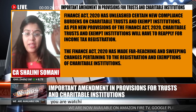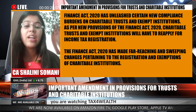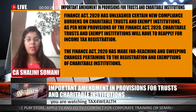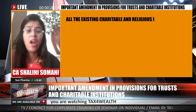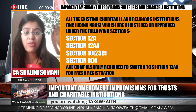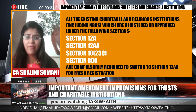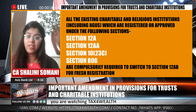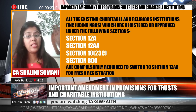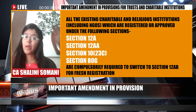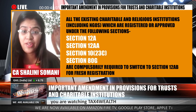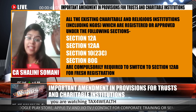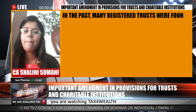Section 12AB لایا گیا ہے جو section 12A of Income Tax Act 1961 کو replace کرتا ہے۔ اس کے حساب سے اب جو بھی trust پہلے 10(23C)، section 11، section 80G، یا section 12A میں registered تھے ان سب کو اب واپس re-registration لینا ہے section 12AB کے اندر۔